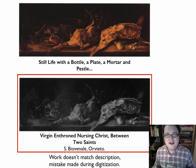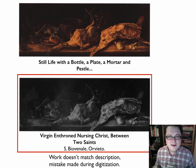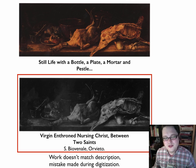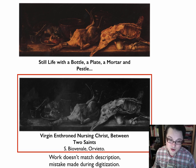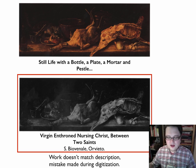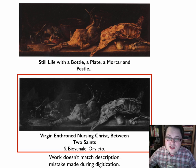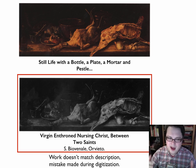There's another case I find pretty amusing: you have two images — one correctly described as a still life with a bottle, a plate, a mortar and pestle — and then down here it says 'virgin enthroned nursing Christ between two saints,' which is definitely not correct. So again, this is another case where the cataloging and metadata disagrees between the two images, but the images themselves are still similar and still come up as a match. This can be very useful.